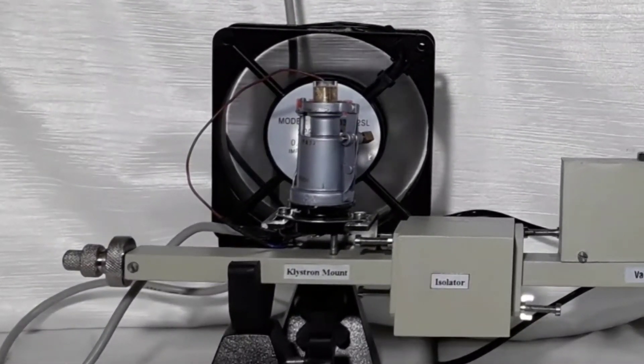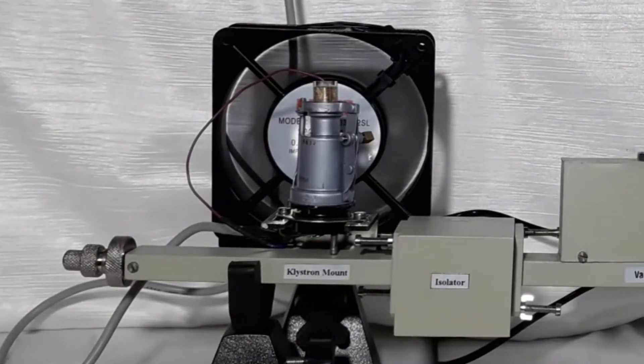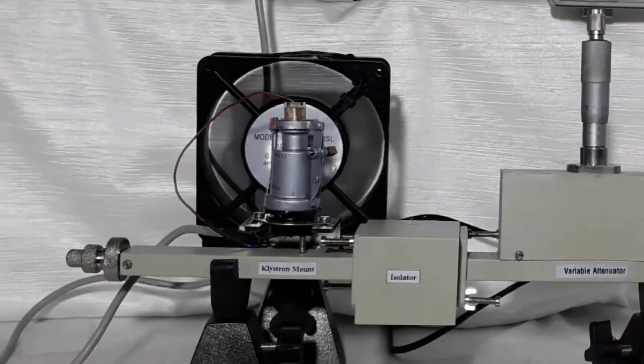Klystron tube is mounted on a component named as klystron mount. A fan is placed in front of klystron tube for cooling purpose.